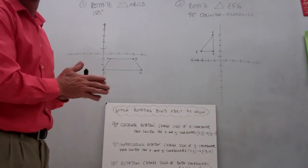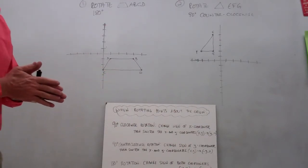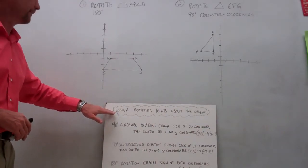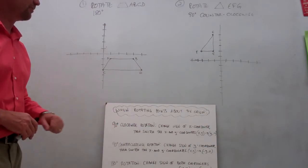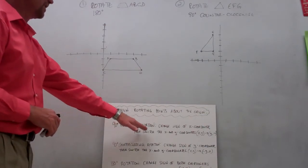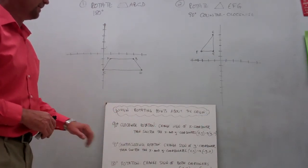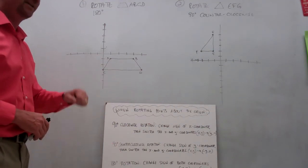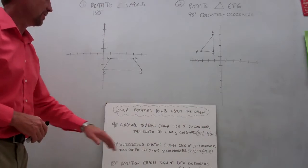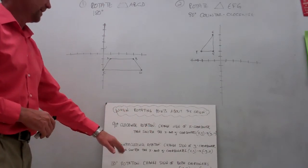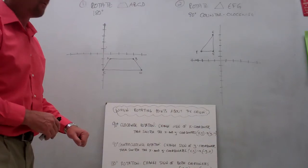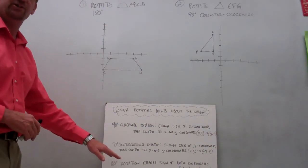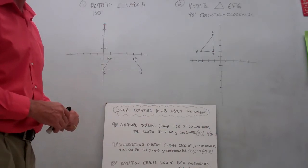When we're rotating points about the origin, there are a couple of rules we can follow. For a 90-degree clockwise rotation, we change the sign of the x-coordinate and then switch the x and y-coordinates. For a 90-degree counterclockwise rotation, we change the sign of the y-coordinate and then switch the x and y-coordinates. And for a 180-degree rotation, we change the signs of both the x and the y-coordinates.